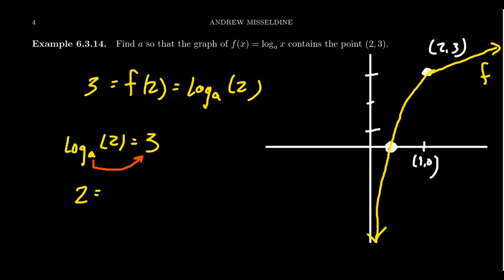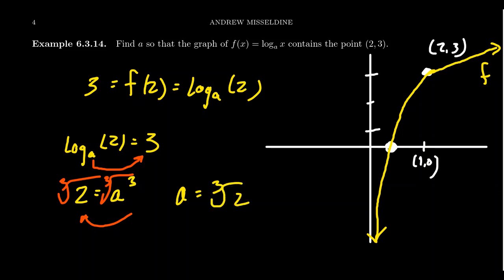This would look like 2 is equal to a cubed. So we switched it from logarithmic form to exponential form. In this situation, the unknown is actually the base and the power is what we know. So we can take the cube root of both sides, and we see that the base a should equal the cube root of 2. So this standard logarithm that goes through the point (2, 3) must have been base cube root of 2.